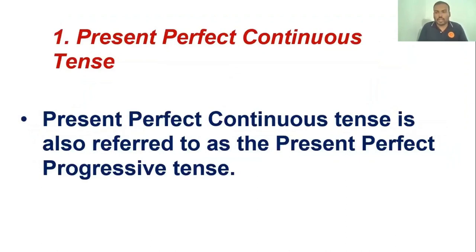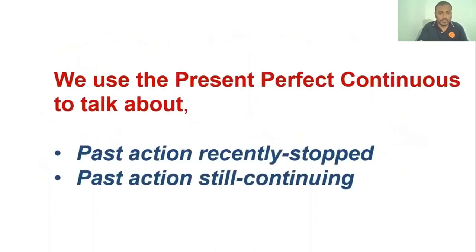The present perfect continuous tense is also known as the present perfect progressive tense. We use the present perfect continuous tense to talk about something or some action that recently stopped, or an action that still continues. Imagine an action that you have started earlier and stopped recently — we use this tense to talk about that, as well as past actions that may still continue.